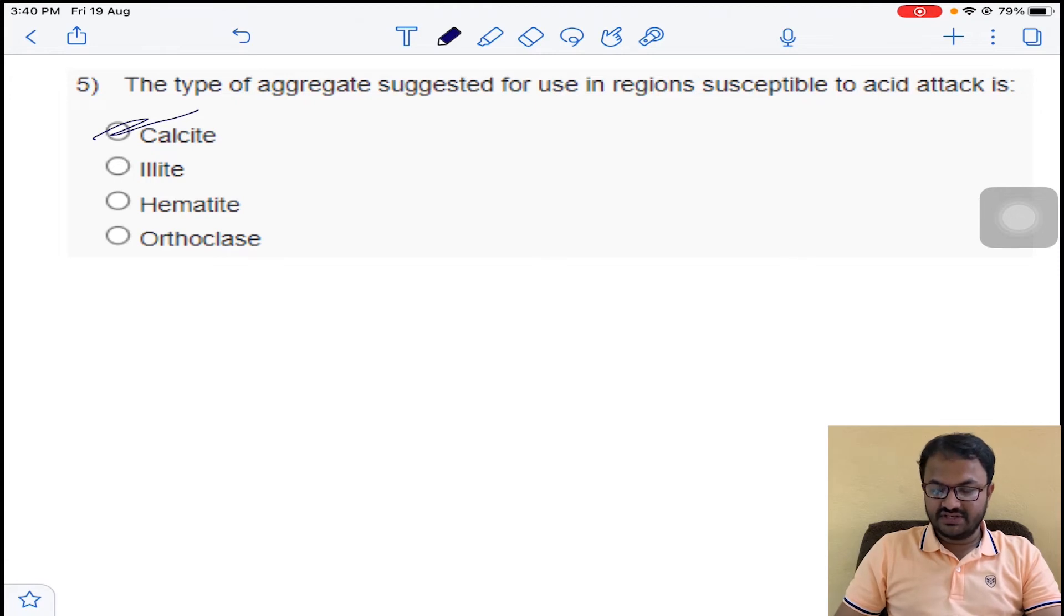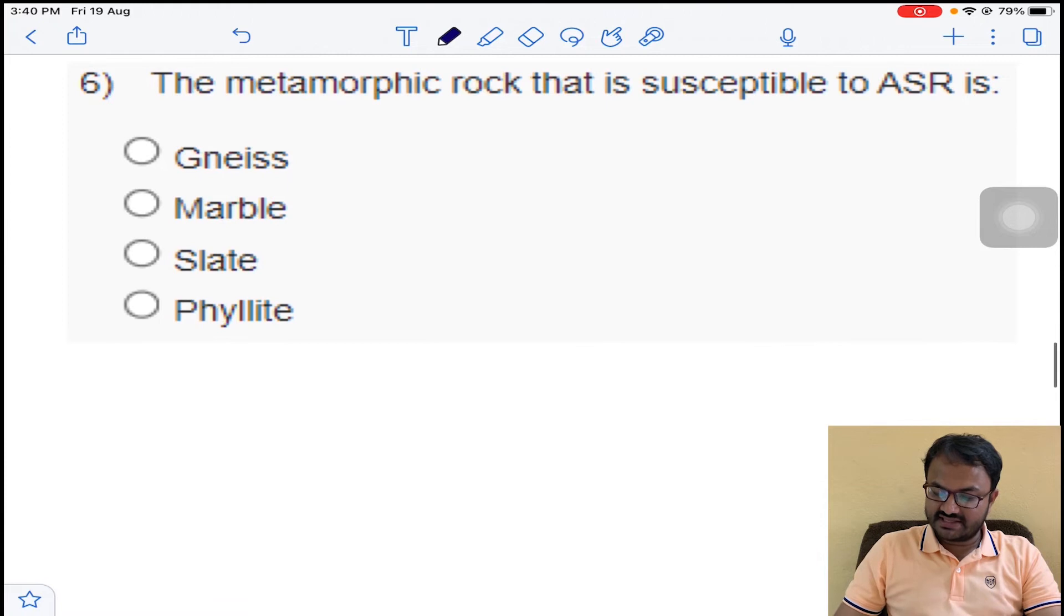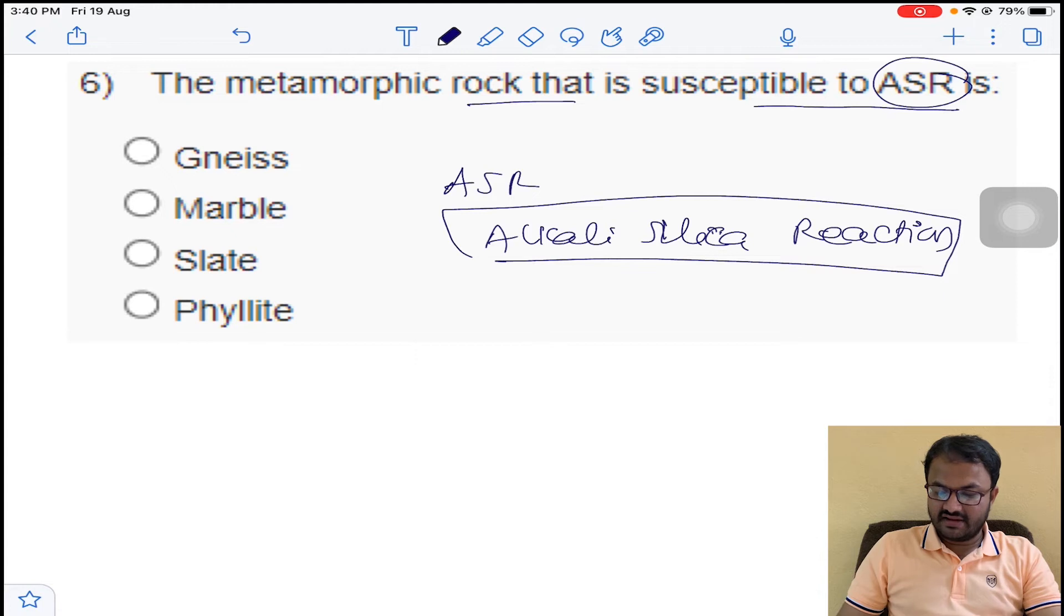Coming to question number 6: the metamorphic rock that is susceptible to ASR. ASR means alkali-silica reaction. By using this alkali-silica reaction, which type of metamorphic rock? Generally you can see here, it is both phyllite and argillite.